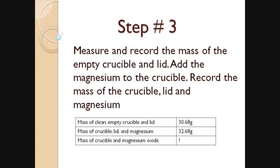Step 3 has 3 parts and you are to record the mass of 3 things. First, record the mass of the clean and empty crucible with lid — this time the mass was 30.68 grams. Second, record the mass of crucible, lid and magnesium — this time the mass was 32.68 grams. Last, measure and record the mass of crucible lid with magnesium oxide, but we cannot do it now because we have not done our reaction yet, so we don't have magnesium oxide.